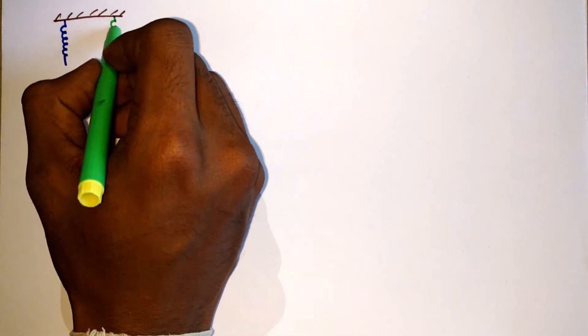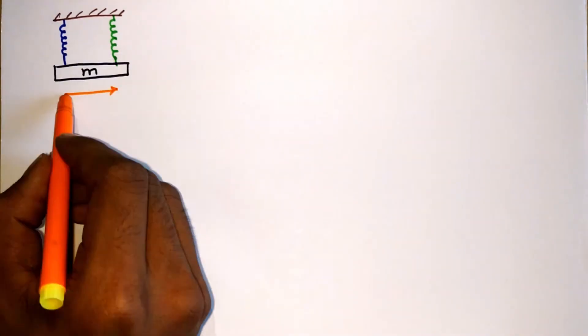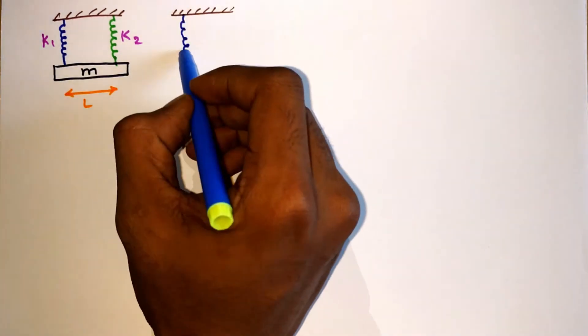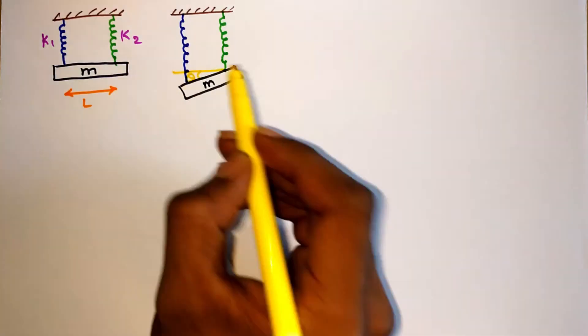Now I have a small question for you. What will happen when a mass M is suspended by two unequal springs? Will both springs undergo the same amount of elongation or not? The answer is no. Springs will have different elongations and the mass will tilt.